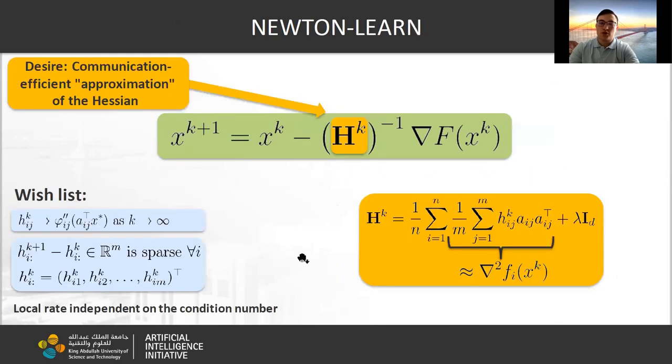Our next contribution is Newton-learn. Our desire is to learn the Hessian at the optimum iteratively and do it effectively in terms of communication. We want to learn the second derivative of loss function at the optimum, but the update H^(k+1) - H^k should be sparse. In addition to that, local rate should be independent of the condition number.